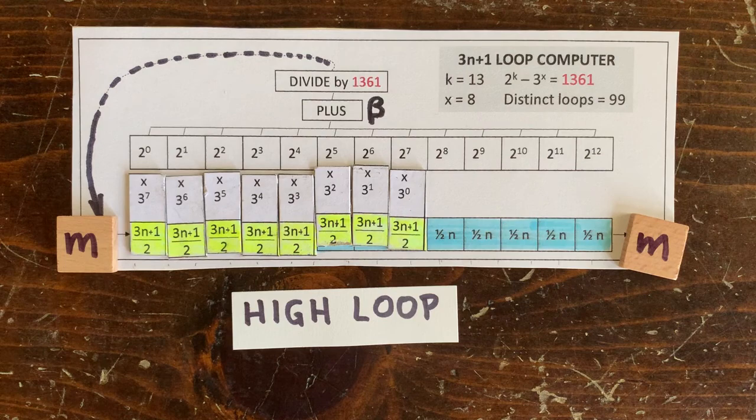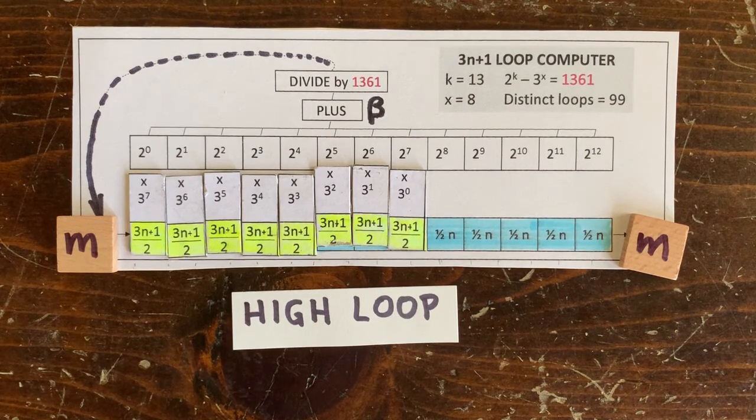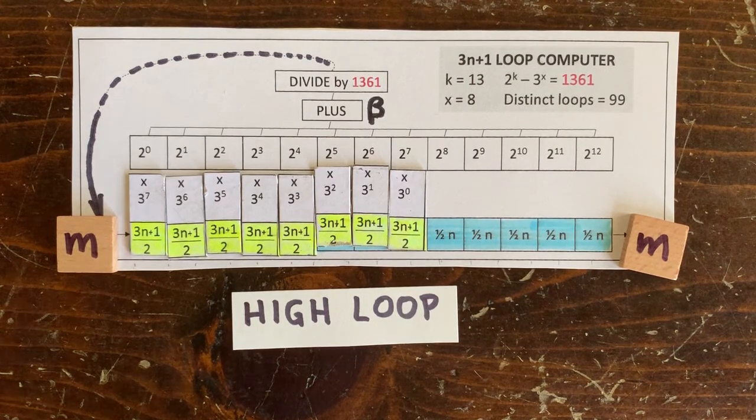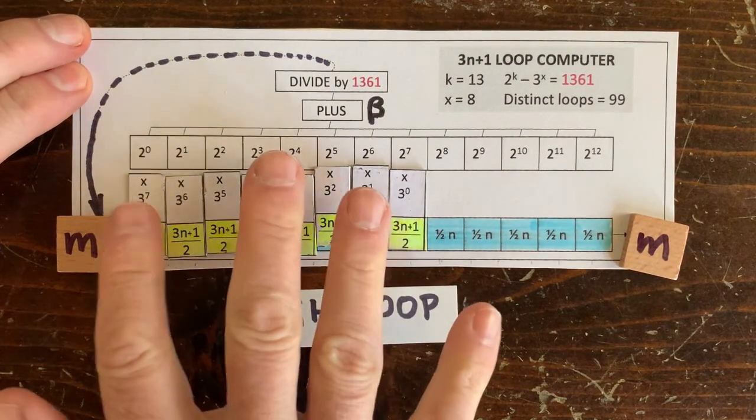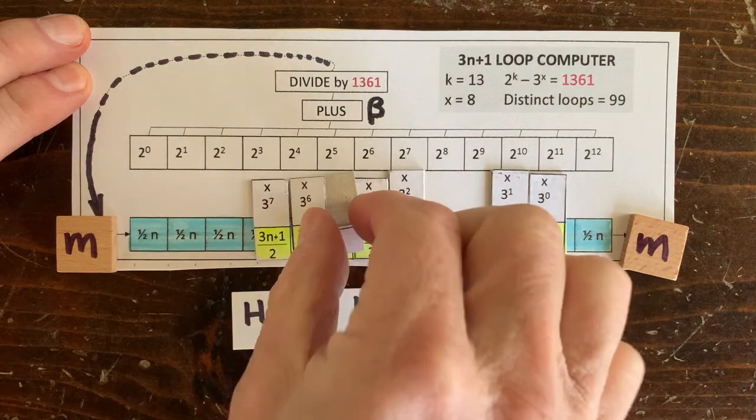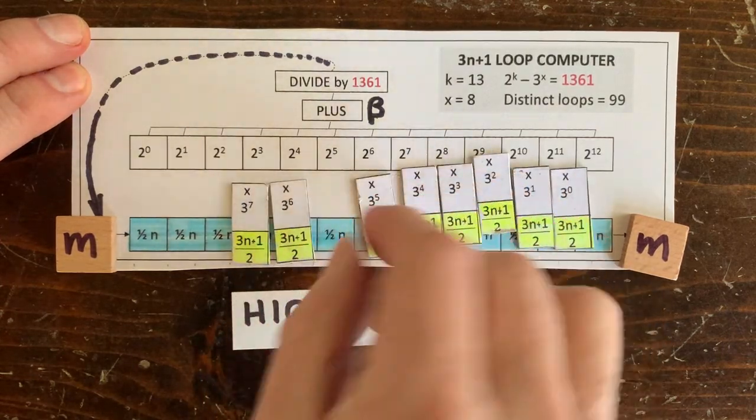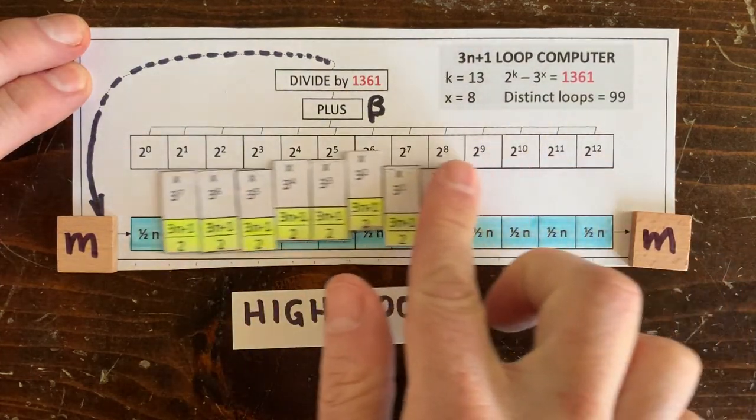Then we test the high loop, and if it has any member under a billion billion, it's not an integer loop. And neither is any other loop of this length. Well, this operation sequence has a huge beta value, but it's the same loop as the one with the tiny beta value, the low loop.